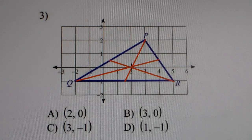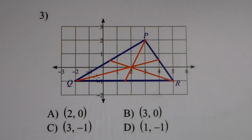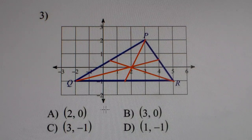There's also the middle between Q and P. There's that point right there. So it looks like the median, or the centroid in this one, is two to the right, zero up. So the answer is two, zero. So number three is A.